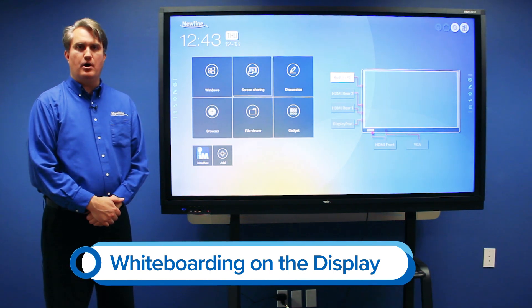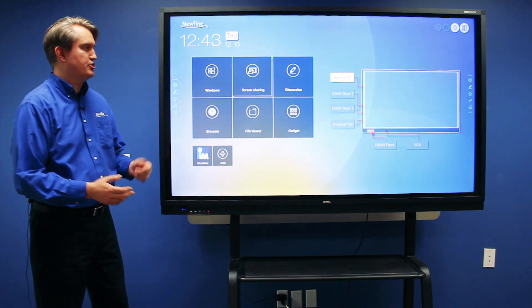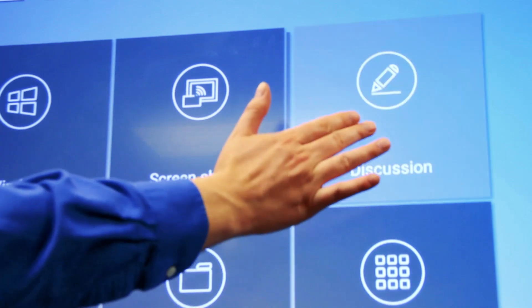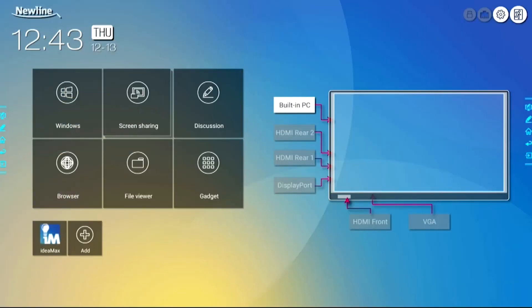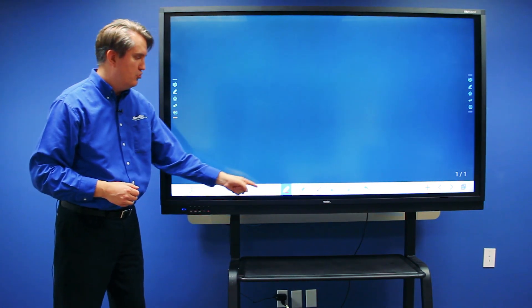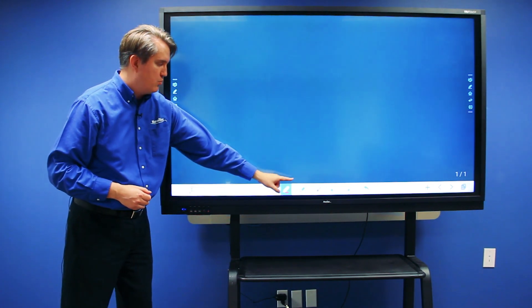To access the embedded whiteboard on the RS, there's a button labeled Discussion. Touch that button and it opens the whiteboard. From here you can choose your writing utensil on the whiteboard toolbar. There's a pen as well as a highlighter.